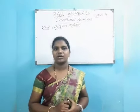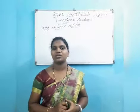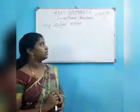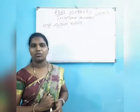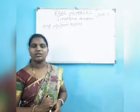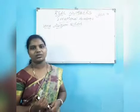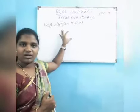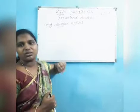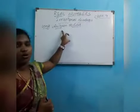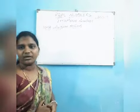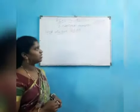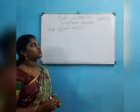In sessions 1 and 2 we discussed about real numbers — that is, rational numbers and how to represent them on a number line. In this class we will find the irrational numbers. Irrational numbers are nothing but numbers which cannot be written in the form of p by q. Examples are all the root values, which come under irrational numbers. By the long division method we can find the values of irrational numbers and represent them on a number line.